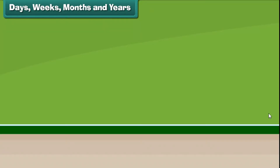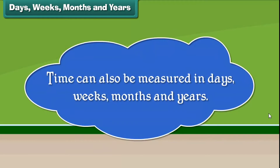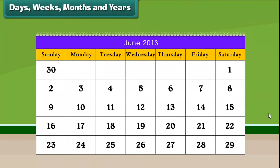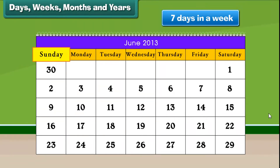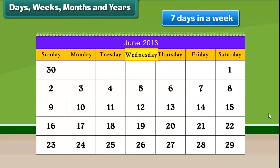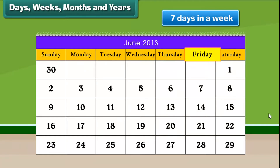Days, Weeks, Months and Years. Time can also be measured in days, weeks, months and years. There are 7 days in a week. They are Sunday, Monday, Tuesday, Wednesday, Thursday, Friday and Saturday.